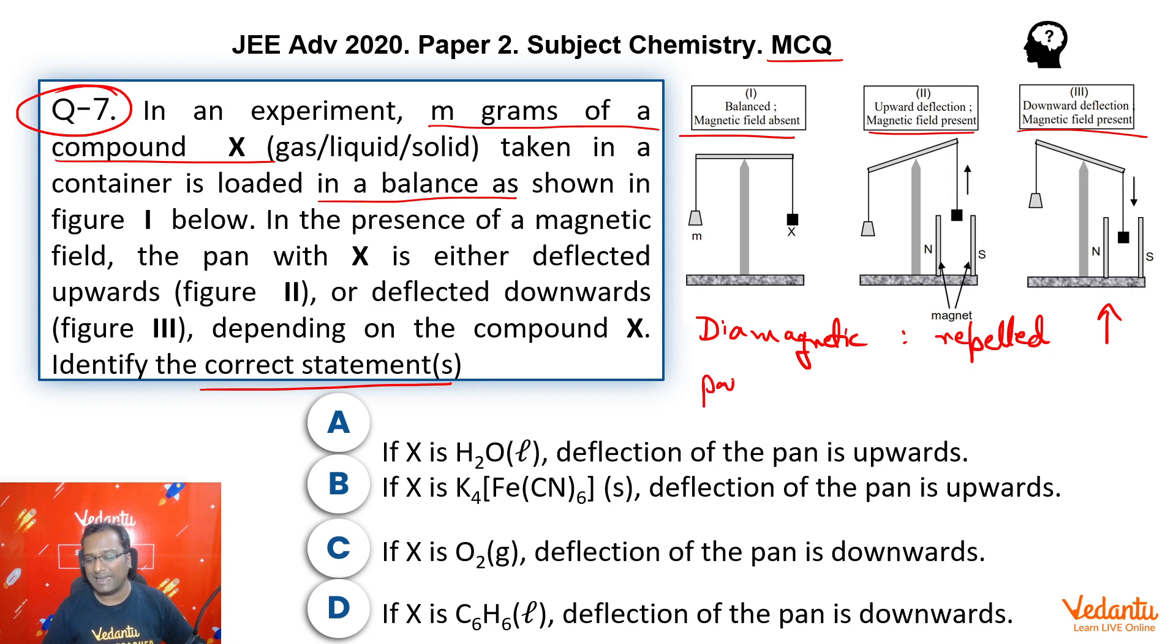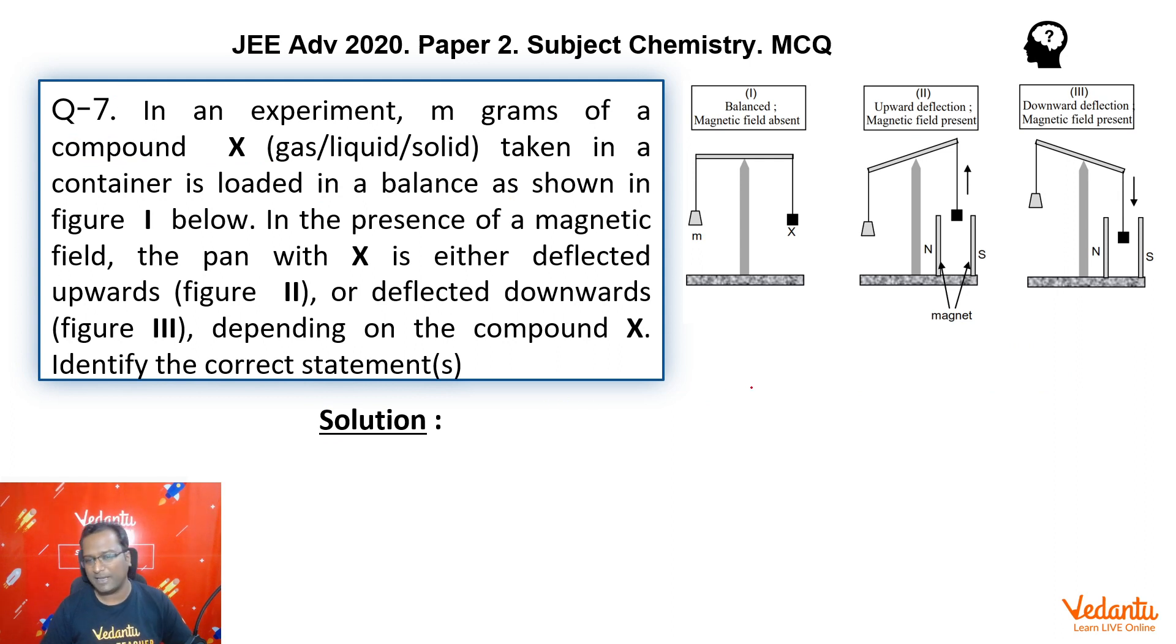If we talk about paramagnetic substance, because of unpaired electrons, they are attracted towards magnetic field and they will be deflected down. So we have four compounds here. Let's take them on the next slide and let's talk whether they are diamagnetic or paramagnetic.